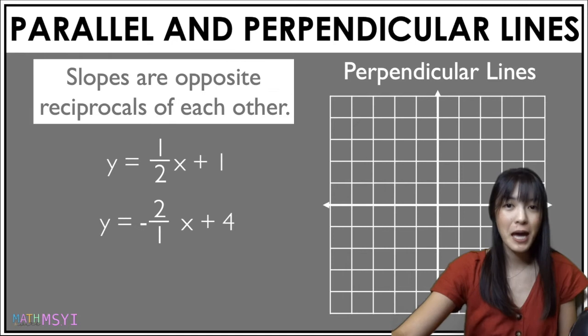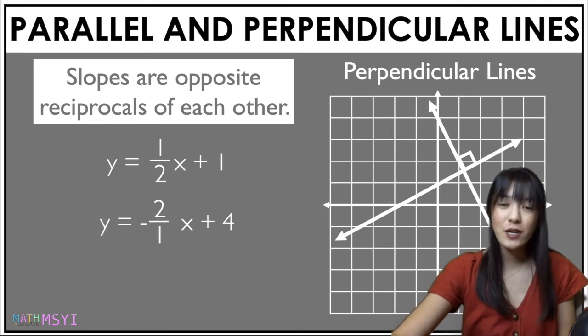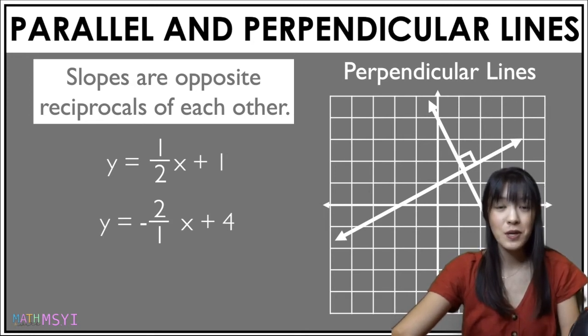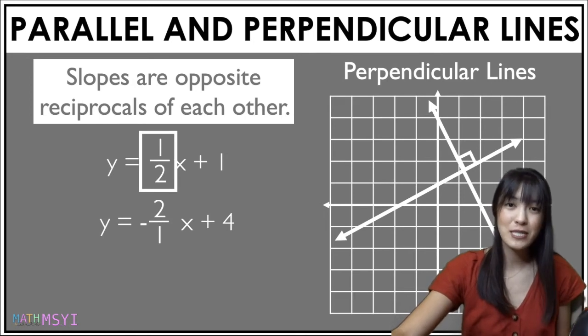When we look at perpendicular lines, let's look at this set here, it does form a right angle, but their slopes here are opposite reciprocals. Opposite reciprocals mean that if we multiply their slopes together, we should get a product of negative one.